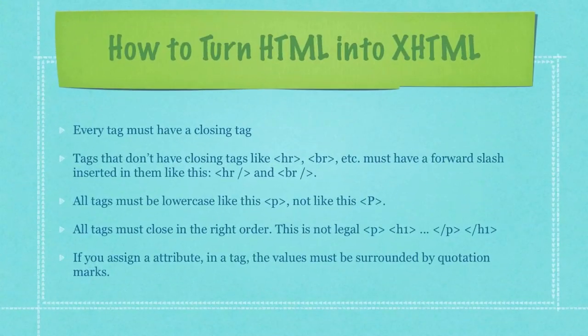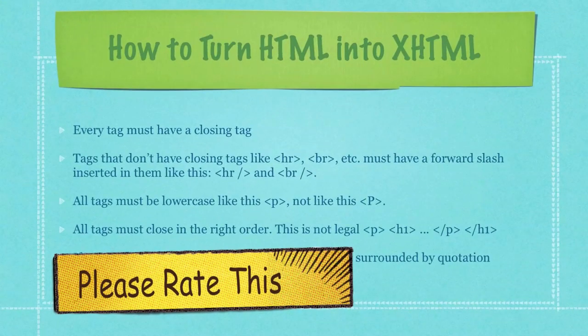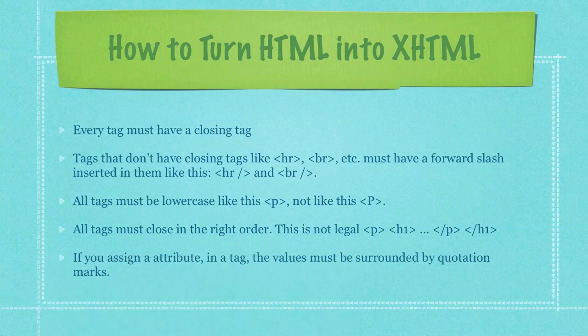So how do you turn HTML into XHTML? First, every tag must have a closing tag. Tags that don't have closing tags, like horizontal rule or break, must have a forward slash inserted in them like this. All tags must be lower case, like you can see here in this paragraph tag — not like this. All tags must also close in the right order.